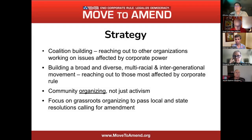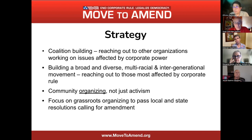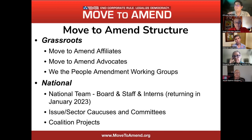The strategy we're using is building a coalition, reaching out to other organizations working on similar issues or affected by corporate power, and building a broad, diverse, multiracial, intergenerational movement reaching those most affected by corporate rule. We are also trying to organize a community, not just activism — focused on grassroots organizing to pass local and state resolutions calling for an amendment. Move to Amend is comprised of affiliate groups all across the nation, as well as advocates and working groups.